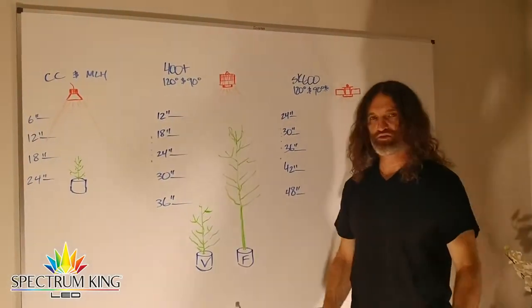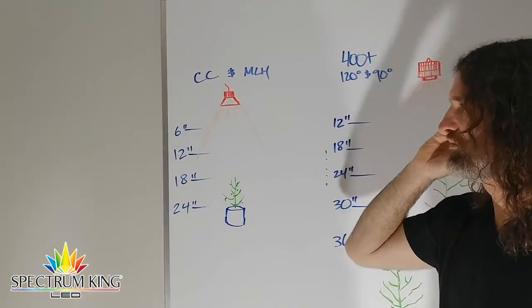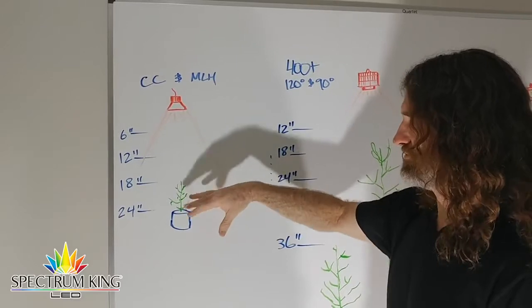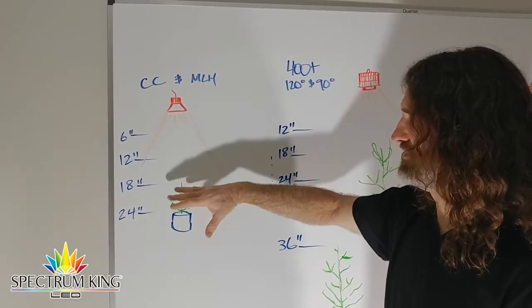Let's start with the 100 watters, the Closet Case and the Multi-Site Helper, better known to us as CC and MLH. In veg, you're going to have them 18 inches above.